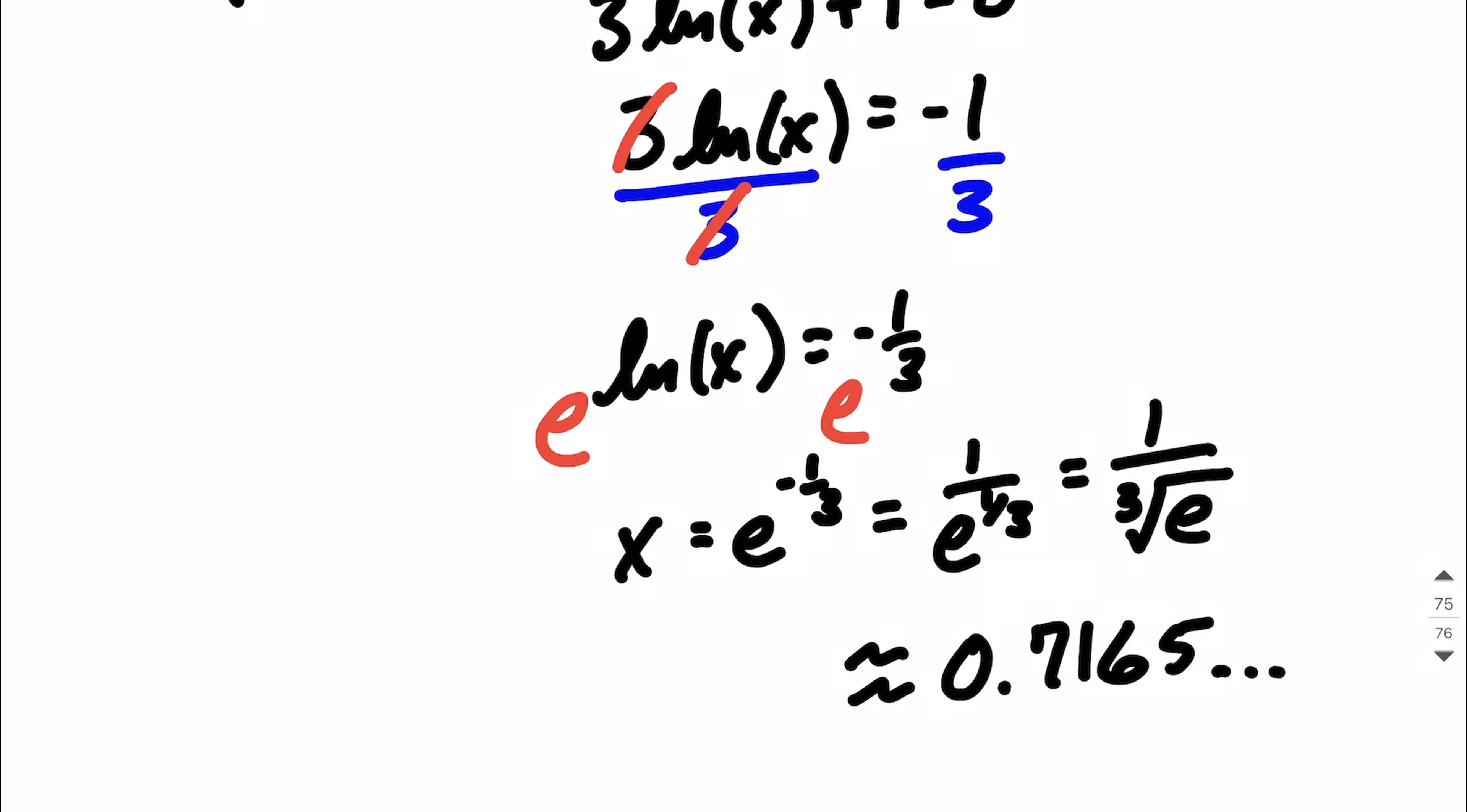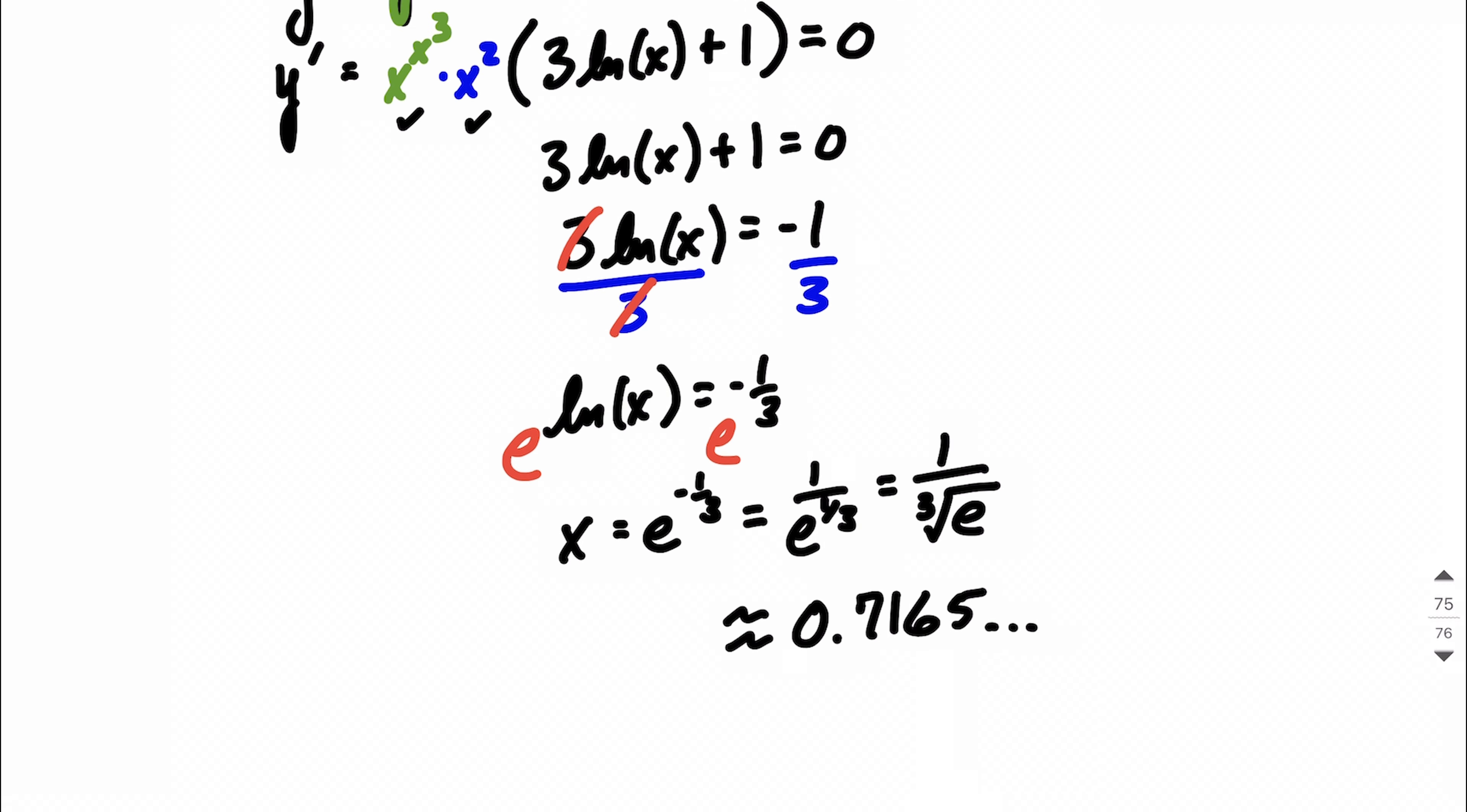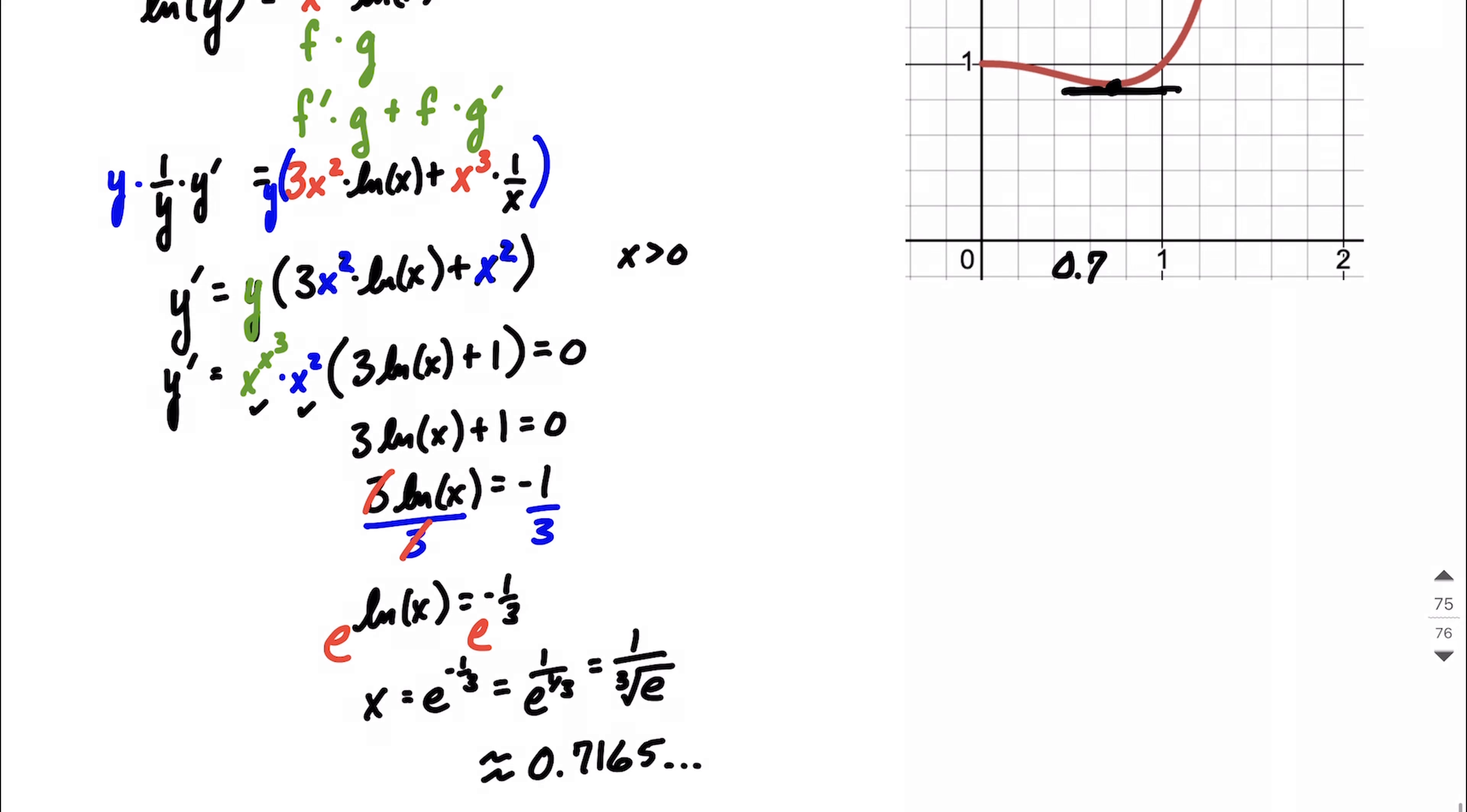And this continues going on afterwards, which kind of matches up with what we said on our graph up here. We said that horizontal tangent line was going to be right about 0.7 from the beginning, just visualizing it on the graph.